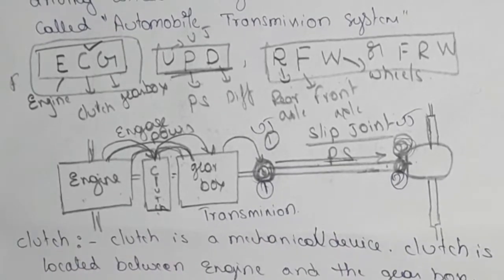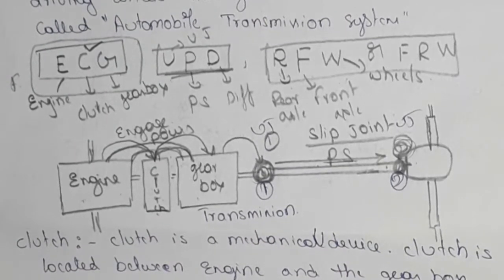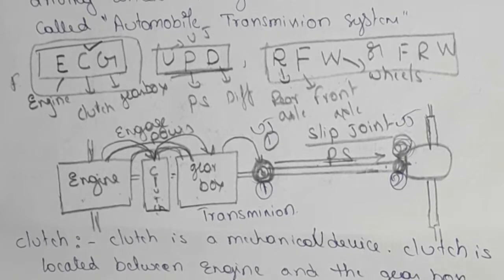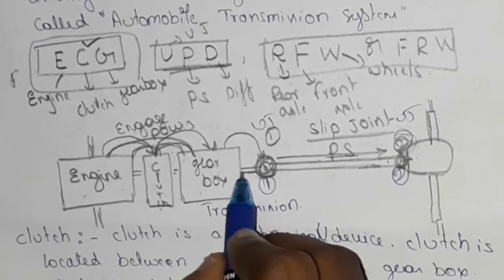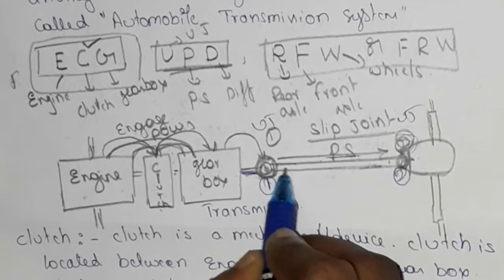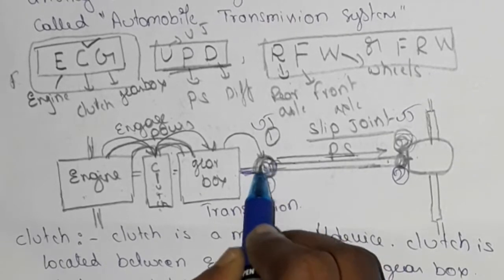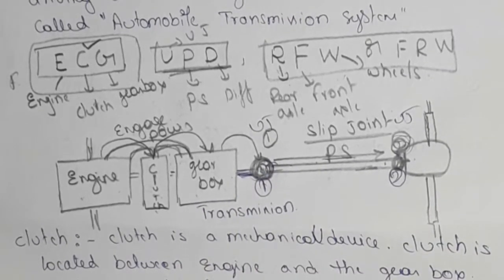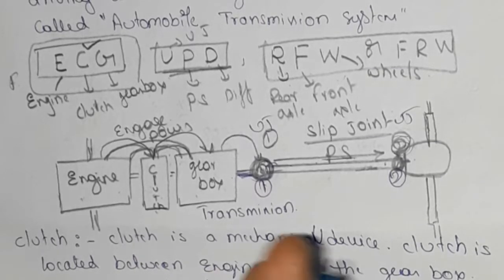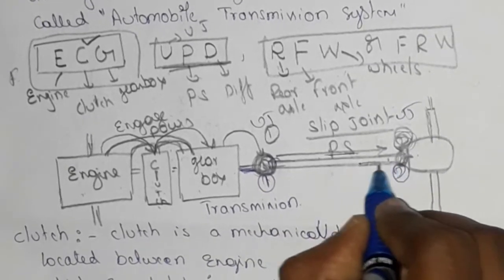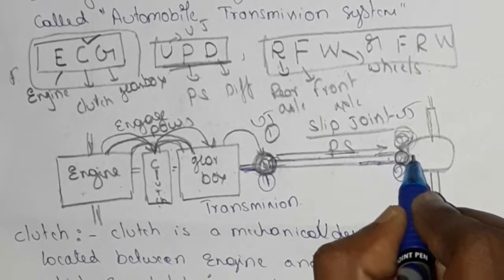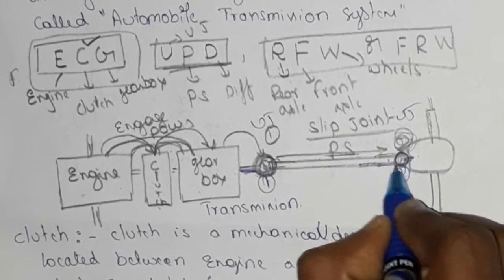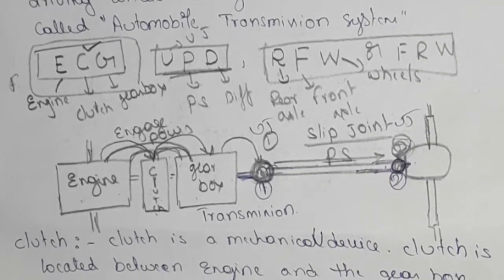One universal joint is located between the transmission — that is, the gearbox main shaft — and the propeller shaft's first end. Another joint is located between the other end of the propeller shaft and the differential.